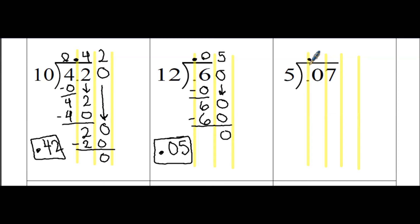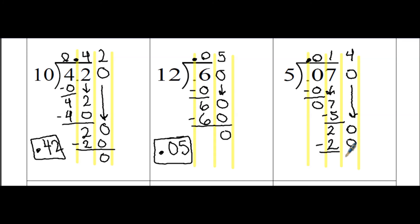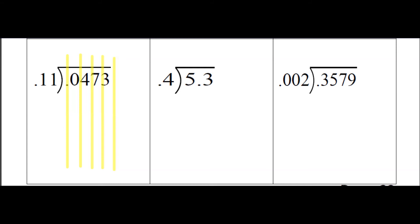5 is a whole number, so we're not going to move the decimal at all — just bring it up in our answer. 5 goes into 0 zero times with 0 left over. Combining our columns by bringing down the 7: 5 goes into 7 one time, 1 times 5 is 5 with 2 left over. We have an empty column, so we put a place holder of 0 and bring it down. 5 goes into 20 four times; 4 times 5 is 20 with 0 left over. So 0.014, or 14 thousandths, is your final answer.